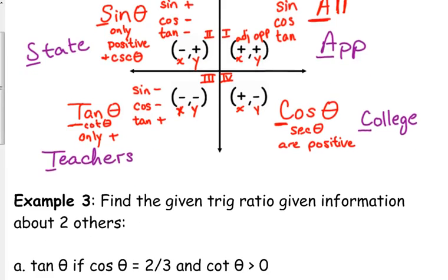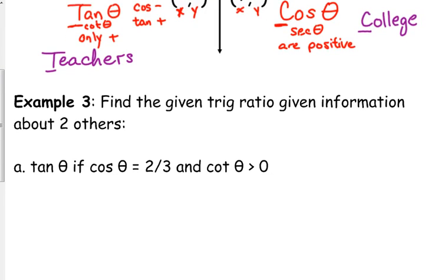So how are we going to use this? Let's look at example three: find the given trig ratio given information about two others. I want to know what the value of tangent of theta is if cosine equals two over three and cotangent is greater than zero. I'm going to break down some of this information. Cosine gives me adjacent over hypotenuse. What I need for tangent is opposite over adjacent, so I'm going to have to figure out the opposite. But before I can do that, I have to know which quadrant I'm in.